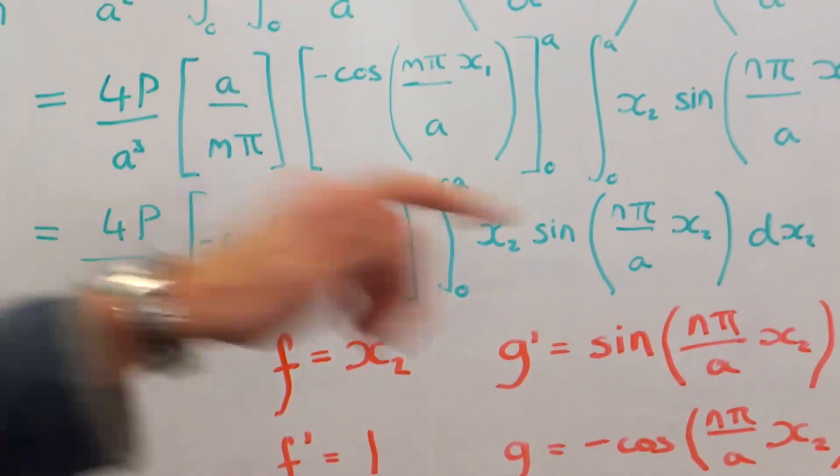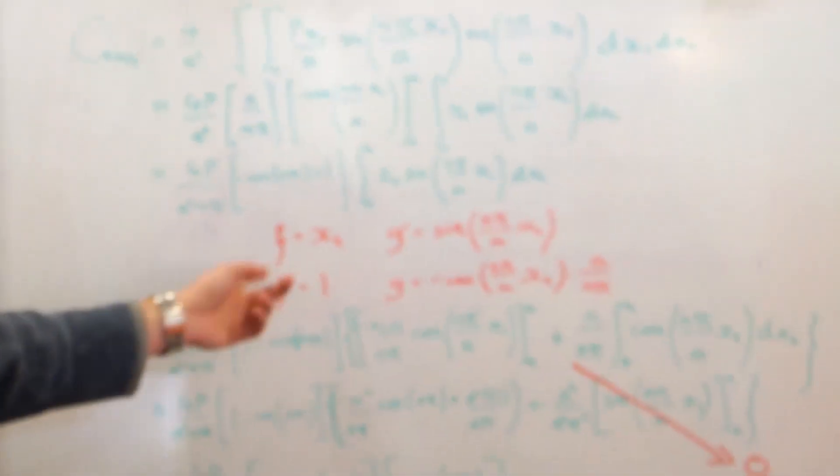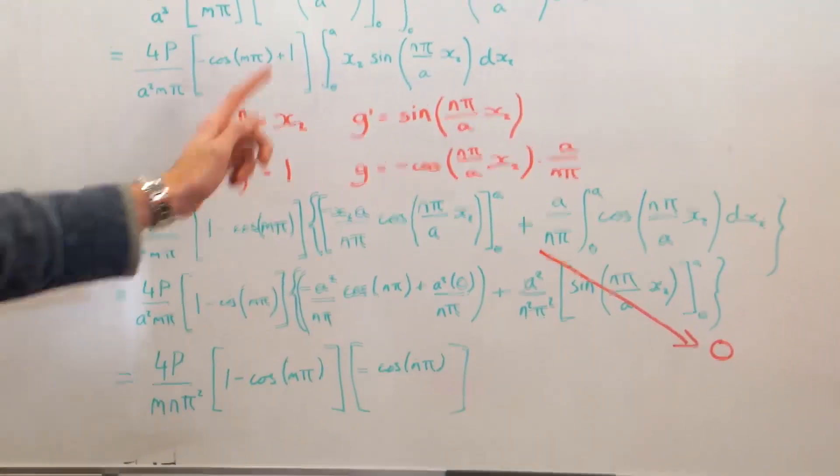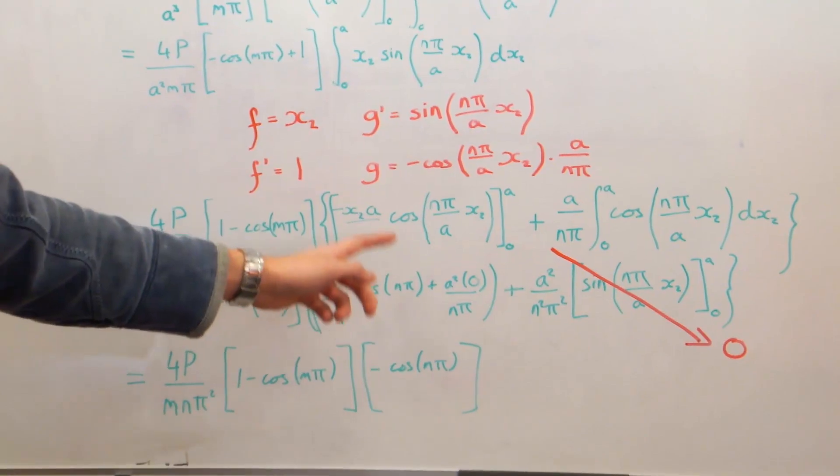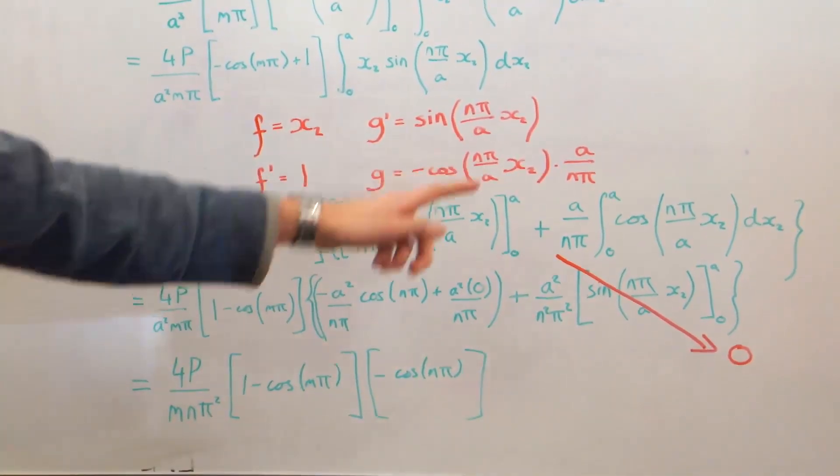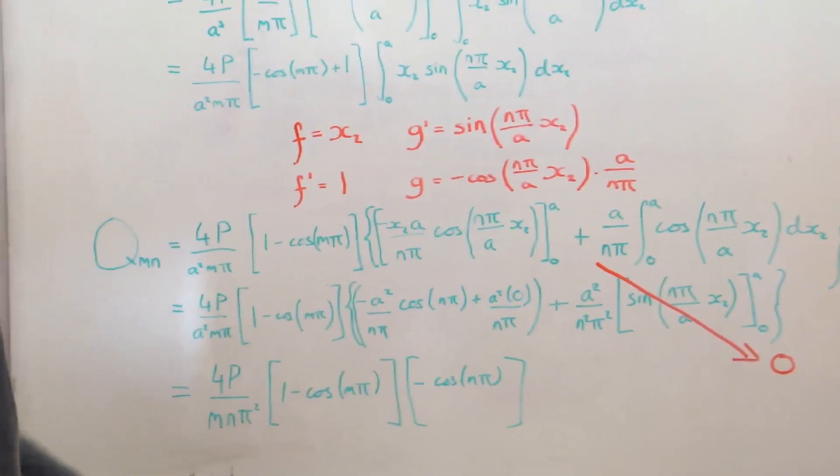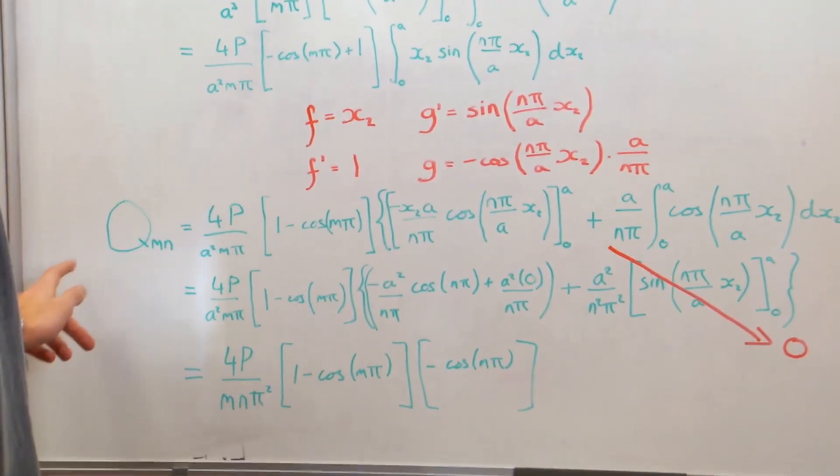And then we need to integrate by parts. So we choose our f of x to be x2, f dash 1, g dash the sine term, and we integrate that. And so normal integration by parts, everyone's done it. So we find an expression for Qmn.